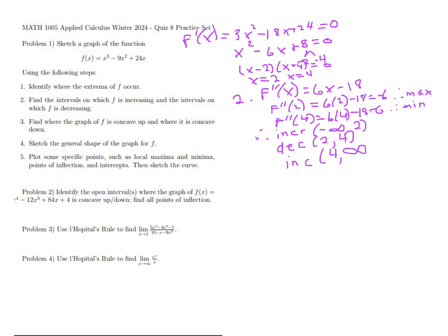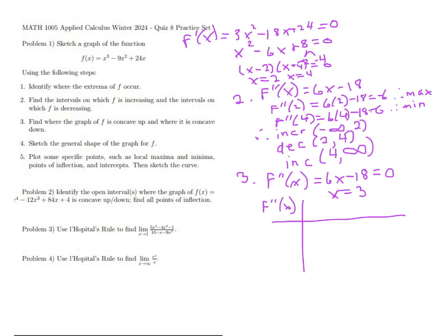For question three, find where the graph of f is concave up and where it's concave down. We use the second derivative test we learned last week. We go back to our second derivative, set it equal to zero, and there's only one place where that happens: x = 3. That's always the halfway point between your max and your min.